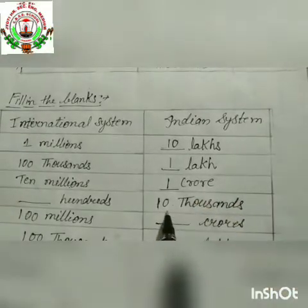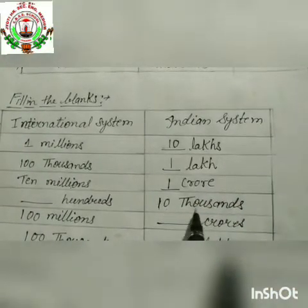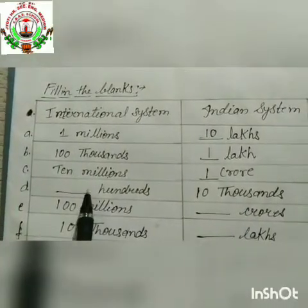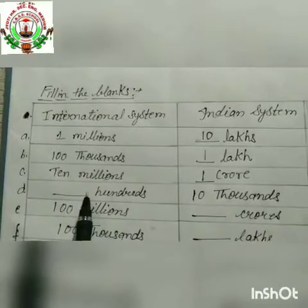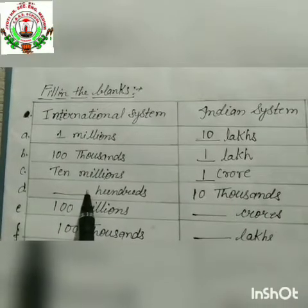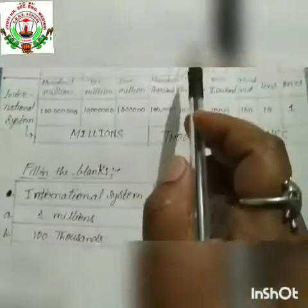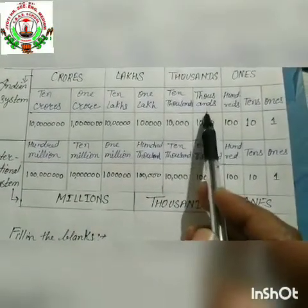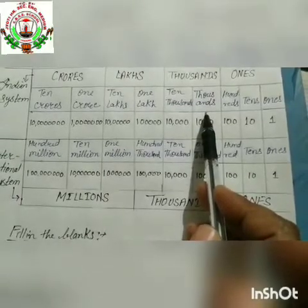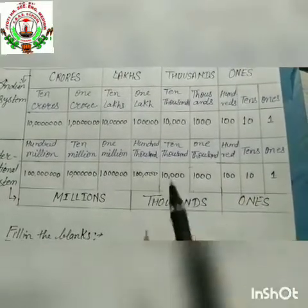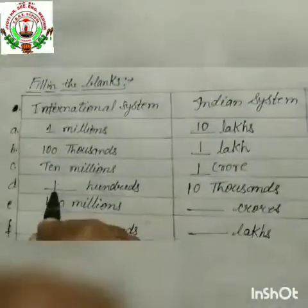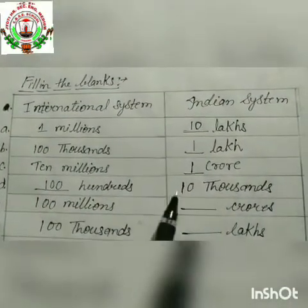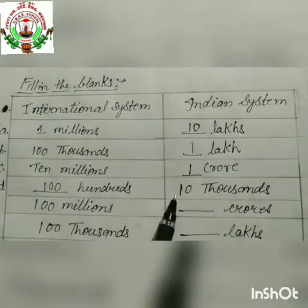Now the next blank D is ten thousand. Ten thousand in the Indian system — how many hundreds is that? We will write here: hundred. Because when we multiply hundred by hundred we get ten thousand.